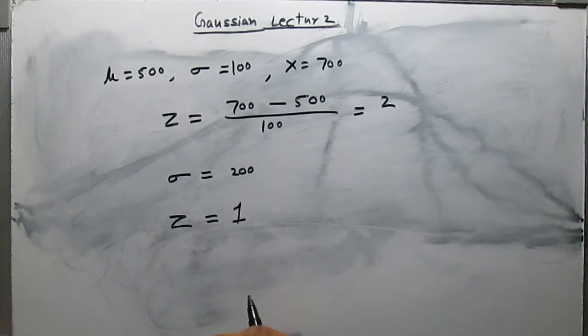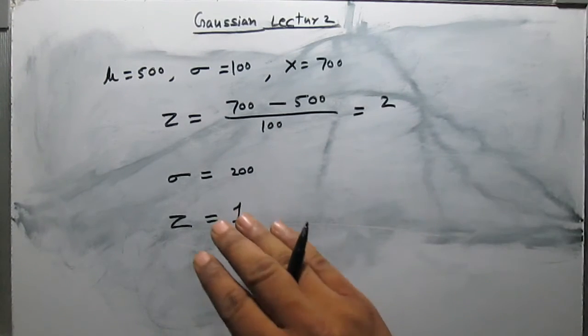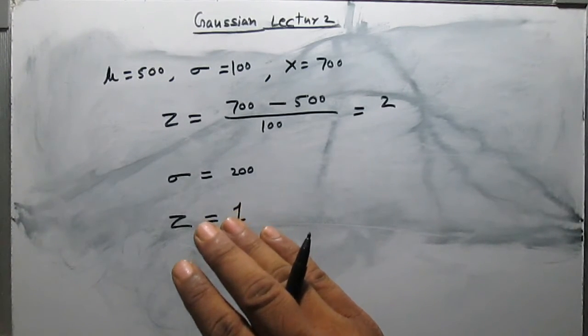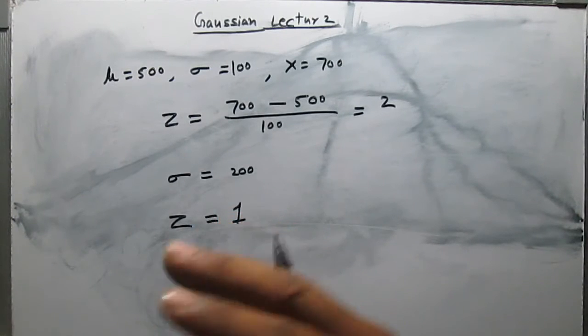It means in the second case, the value 700 is one standard deviation away from the mean. It means in the second case the value 700 is more usual than the previous one.